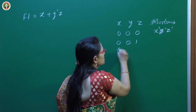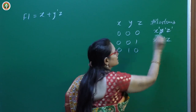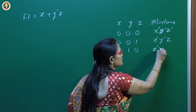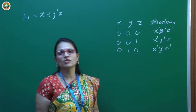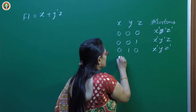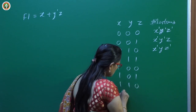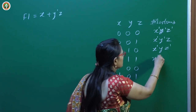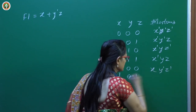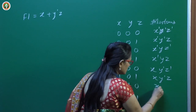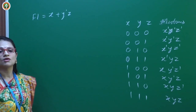Continuing for all combinations: for x=0, y=0, z=1 we get x'y'z; for x=0, y=1, z=0 we get x'yz'; and so on. For 1,0,0 we get xy'z'; for 1,0,1 we get xy'z; for 1,1,0 we get xyz'; for 1,1,1 we get xyz. These are all the min terms for a 3-input variable system. Every row in the truth table has one min term associated with it.